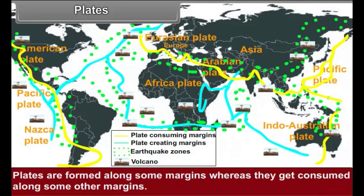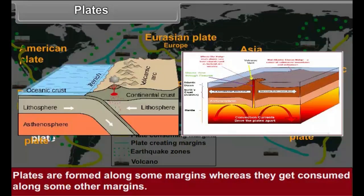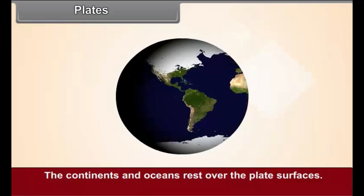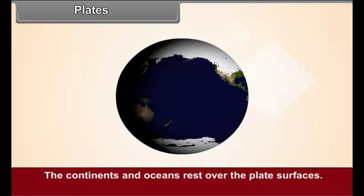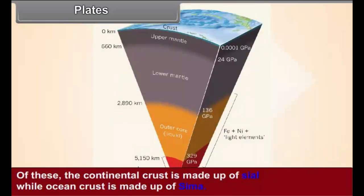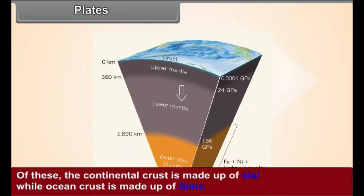Plates are formed along some margins, whereas they get consumed along some other margins. The continents and oceans rest over the plate surfaces. Of these, the continental crust is made up of sial, while the ocean crust is made up of sima.